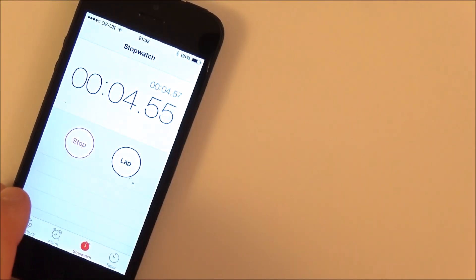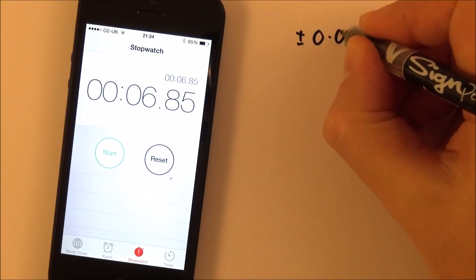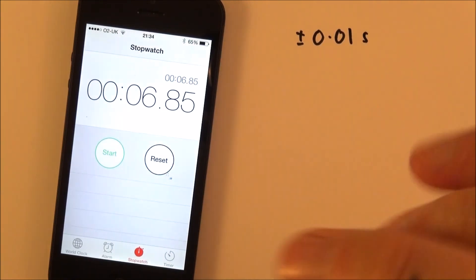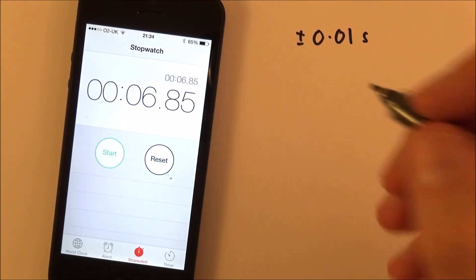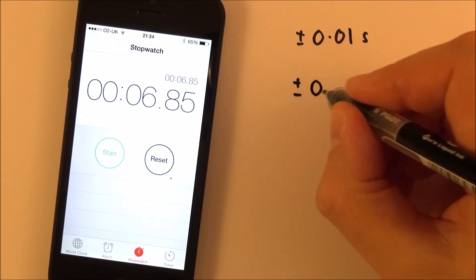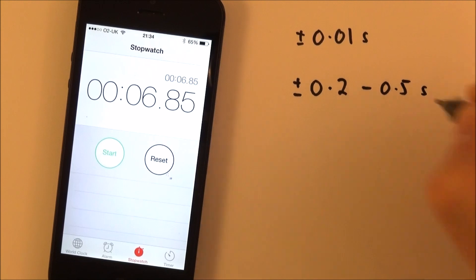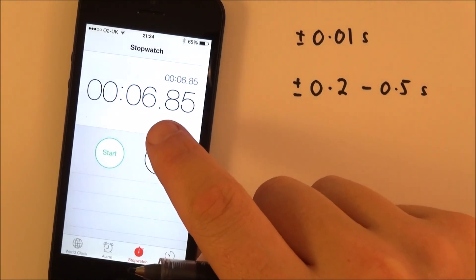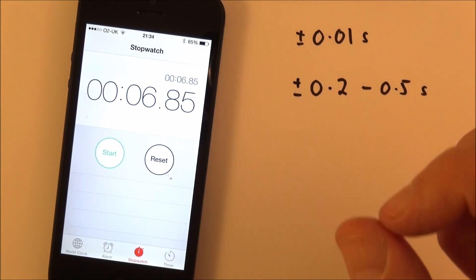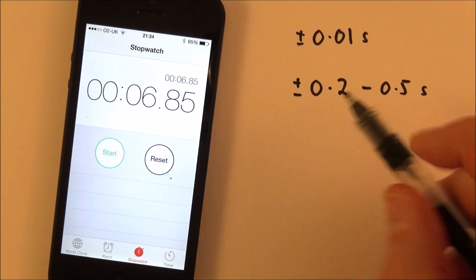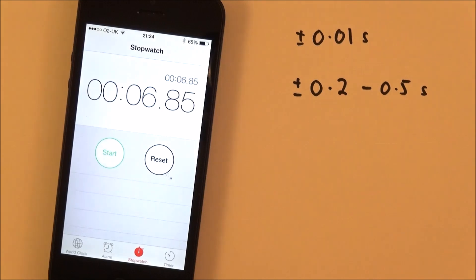Now a final thing to note is when it comes to recording time, it isn't actually plus or minus 0.01 of a second. When it comes to time, and this is our special case, because we have our human reaction time, the absolute uncertainty in time is about 0.2 up to 0.5 of a second. Although we might have a high resolution on the measuring instrument, the fact that we are humans and we do have this time delay does mean that the absolute uncertainty in measuring time is limited to about plus or minus 0.2 of a second.